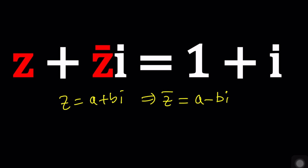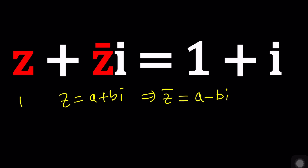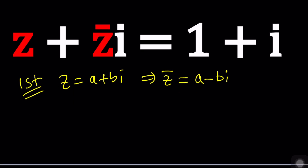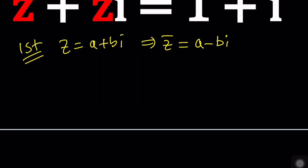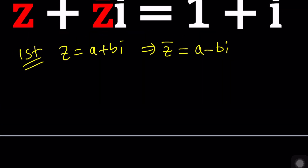The first method is to call Z equal to A plus Bi. When you replace Z with that and Z̄ with A minus Bi, don't forget to multiply by i and set it equal to 1 plus i.